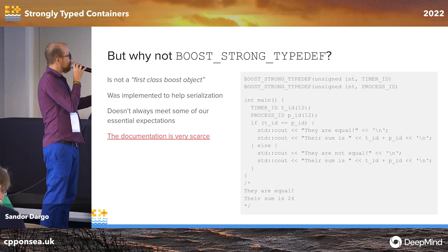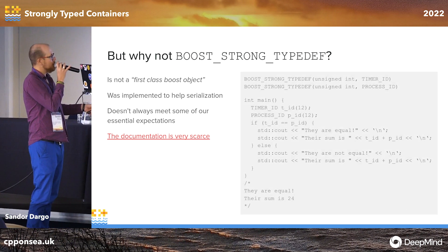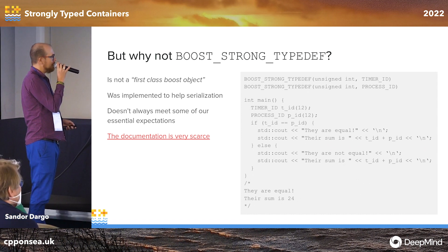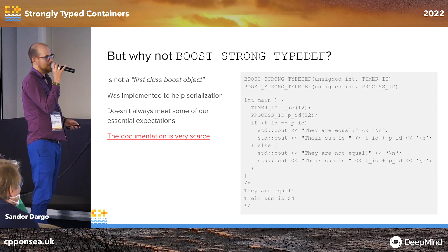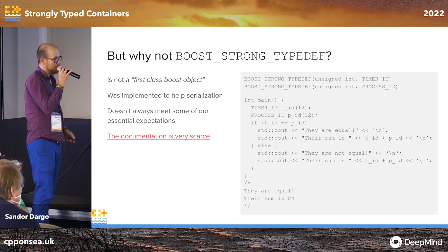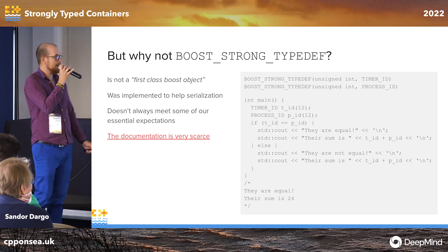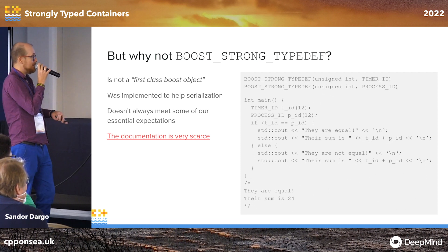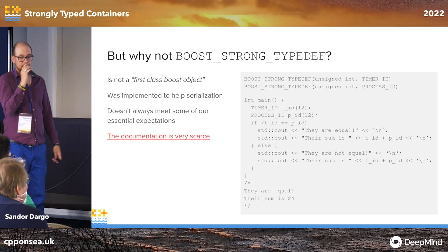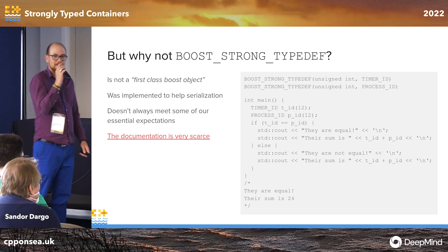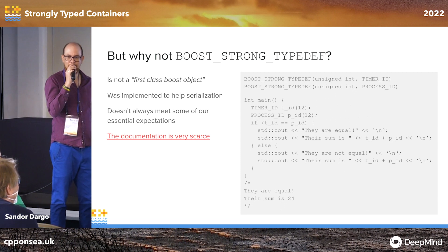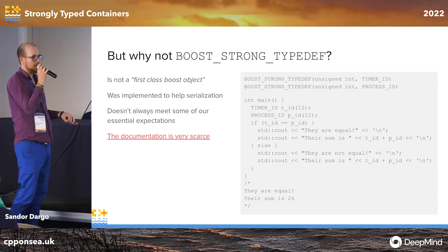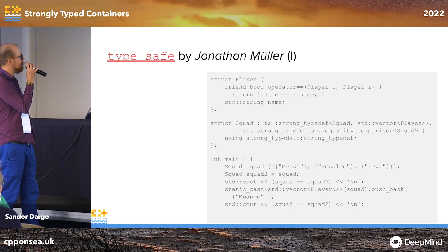With Boost strong_typedef, you use macros to create a TimerID and a ProcessID, but at the end you could compare a TimerID with a ProcessID, set it equal, or even sum them up. That's the kind of issue mentioned earlier that we might run into — so this is not something we'd like to go with.